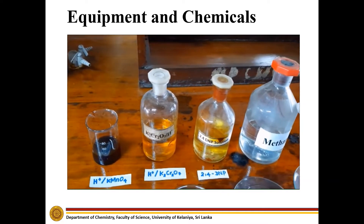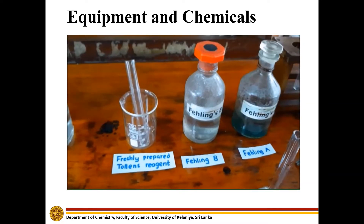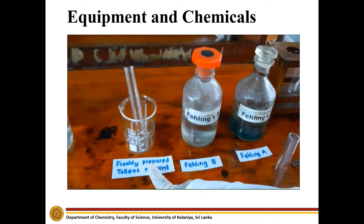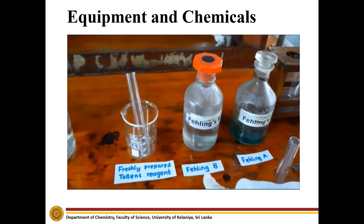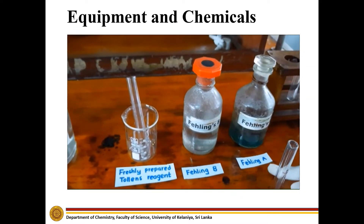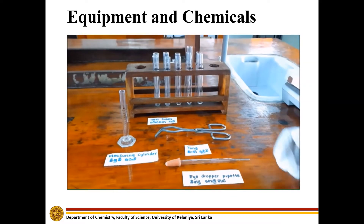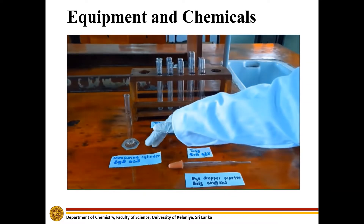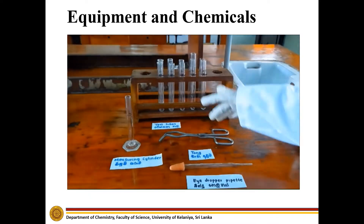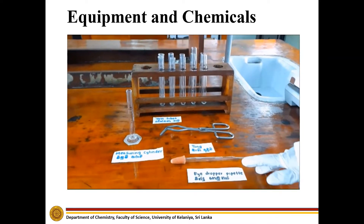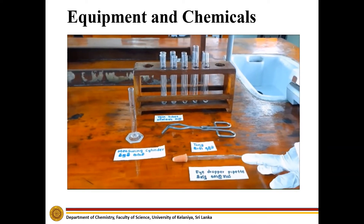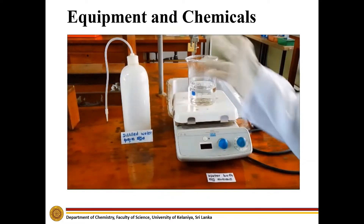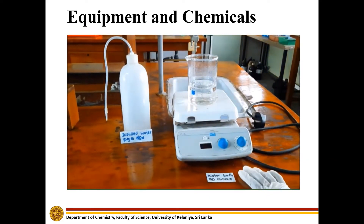We also use methanol, freshly prepared Tollens' reagent, Fehling's B reagent, and Fehling's A reagent. Required equipment includes test tubes, measuring cylinder, tongs, and dropper. In addition to that we need distilled water and a water bath.